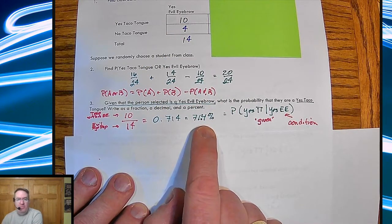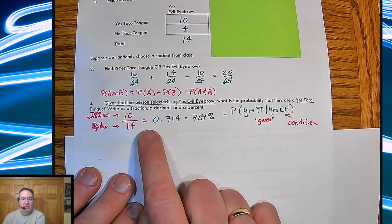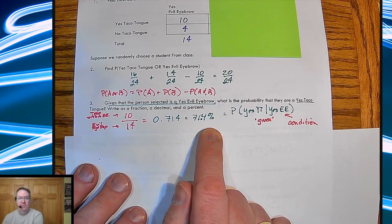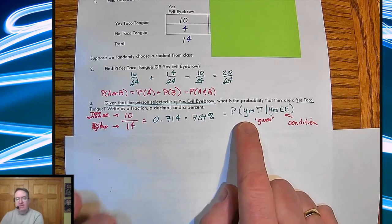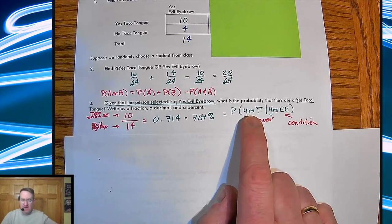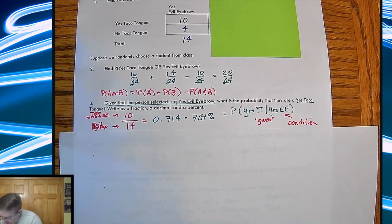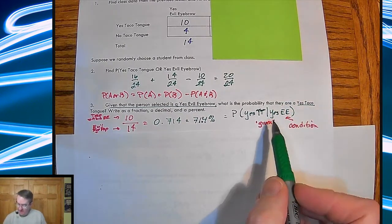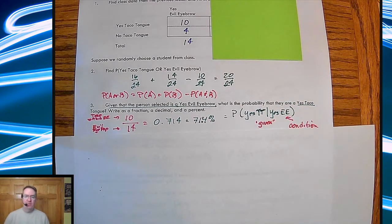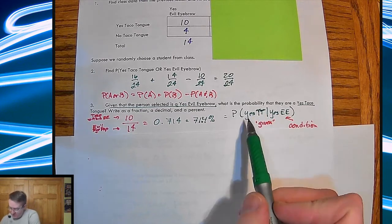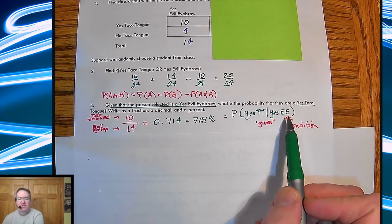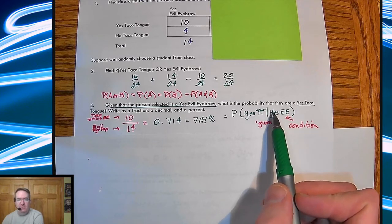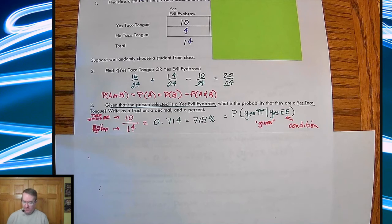And then that's about 71.4%. Safest number, always go three decimal places, because that means you're going to go to the tenths of place in terms of percentages. The way that you end up writing that is called this. So yes to taco tongue. And this line down here is how you say given in probability. What's the probability that you have taco tongue given that you have evil eyebrows? The second one over here is always going to be the condition that has already been met.